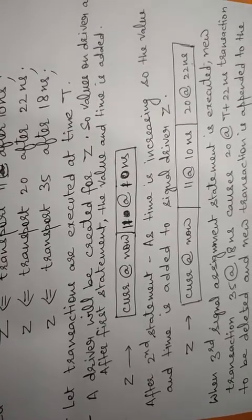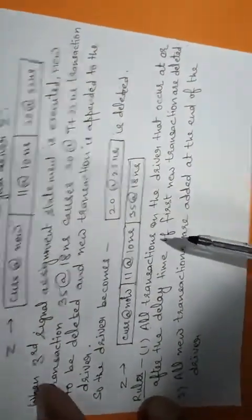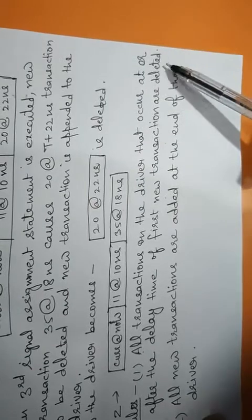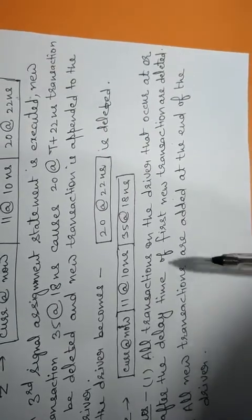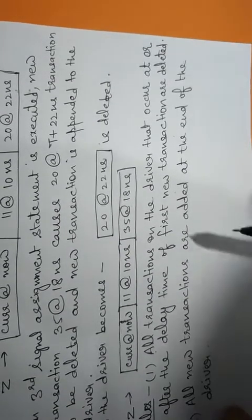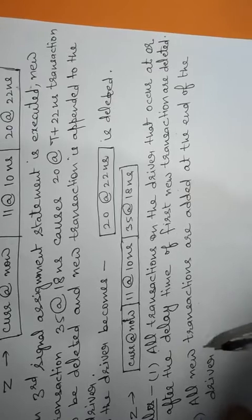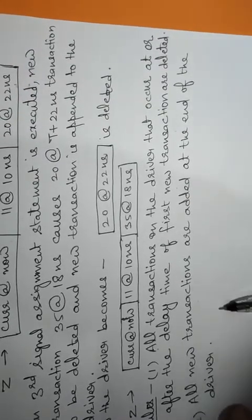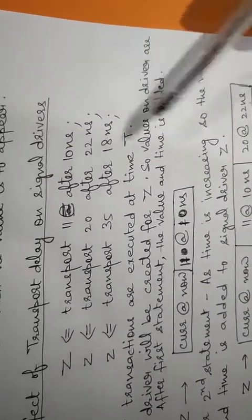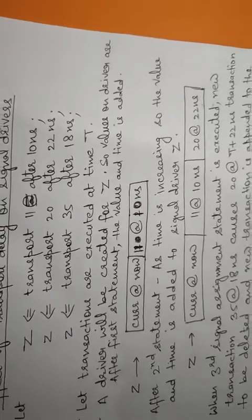Now, what are the rules for the signal driver in transport delay? The first rule: all transactions on the driver that occur at or after the delay time of the first new transaction are deleted — meaning if the new transaction's time is less than the previous transaction, the previous transaction will be deleted. The second rule: all new transactions are added at the end of the driver, i.e., if the time period is higher, as we saw with the second transaction, that transaction will be added to the signal driver. This is the effect of transport delay on signal driver.